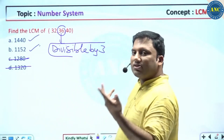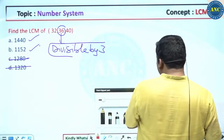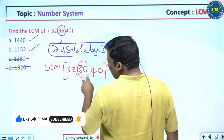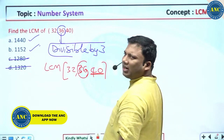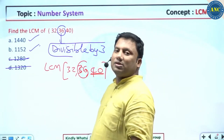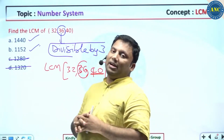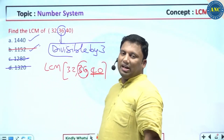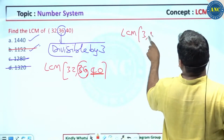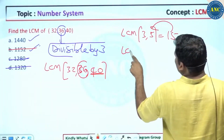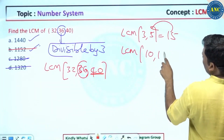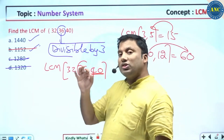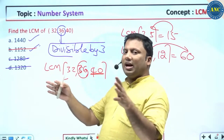Now comes another concept — this is how mathematics has evolved. LCM of 32, 36, and 40. If I take this number, it is divisible by 3, but the next number, 40, is divisible by 5. So the answer should be divisible by 5. A number divisible by 5 must have a unit digit of 0 or 5. The answer 1152 doesn't satisfy this. For example, LCM of 3 and 5 is 15, and LCM of 10 and 12 is 60 — divisible by 5. LCM always contains a combination of the input numbers.